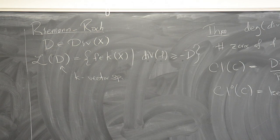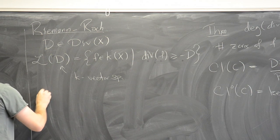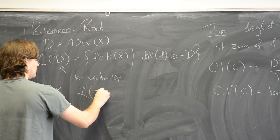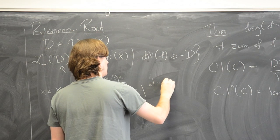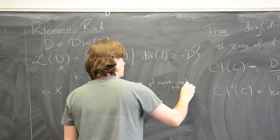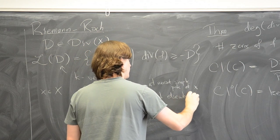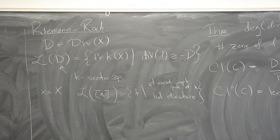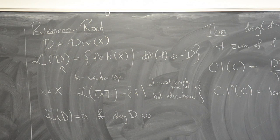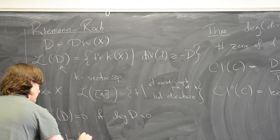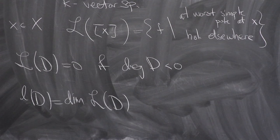If you haven't seen this before it can be confusing, especially with the minus sign. A good example: if you take a point x of the curve and consider the divisor consisting of just that single point, L(x) is the space of functions that have at worst a simple pole at x and are holomorphic everywhere else. A simple but important fact: L(D) is zero if the degree of D is negative. I'll write lowercase l(D) for the dimension of this vector space; it's not hard to show it's finite-dimensional.